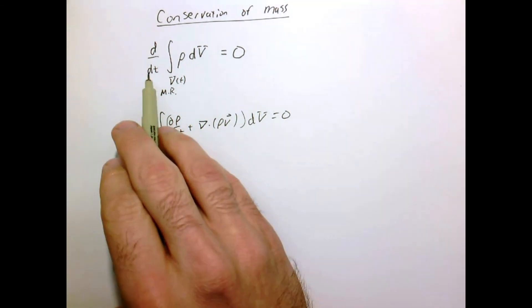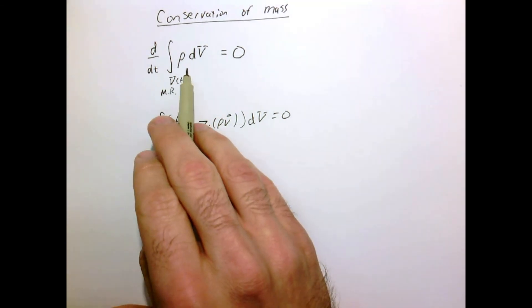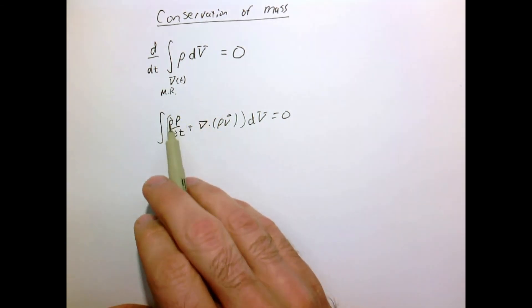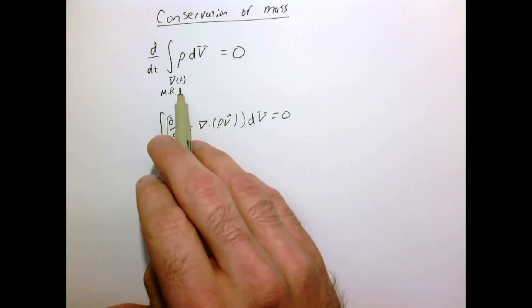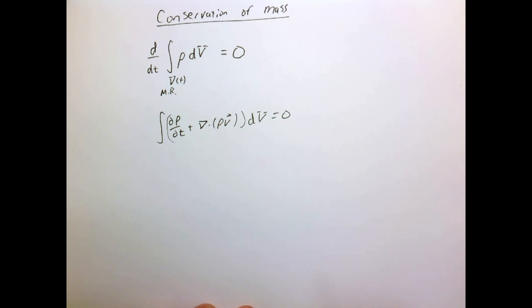And we convert, once we move this derivative into the integral sign, we have the two terms, the field itself changing, the density. And this term which represents, it comes from the fact that our material region can be changing with time.